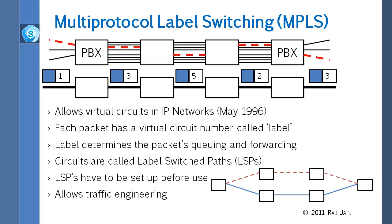A student asks why it's called a virtual circuit. In real circuit switching, there are physically 8 wires between switches. In MPLS, there is only one wire, and we say this red circuit goes on circuit number 3 — but really there is no physical wire number 3. That 3 is a virtual number. So this thick wire is being divided in terms of bandwidth into many thin virtual wires. There are MPLS switches in the middle that do the forwarding.